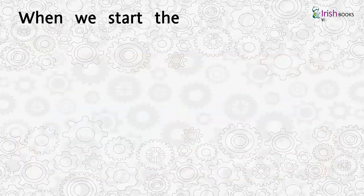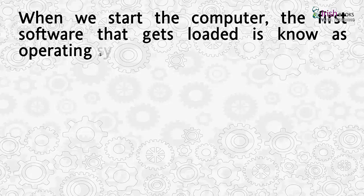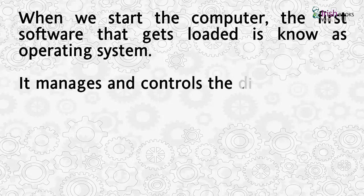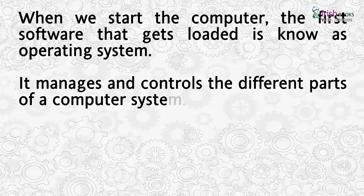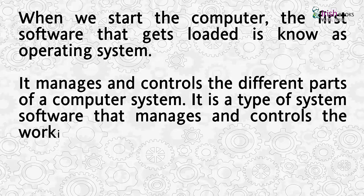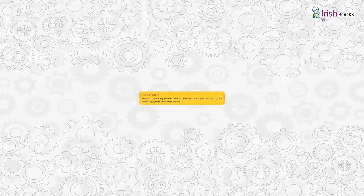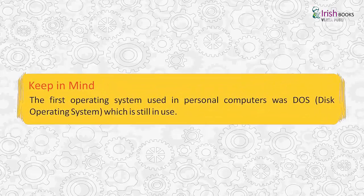When we start the computer, the first software that gets loaded is known as the operating system. It is a type of system software that manages and controls the working of a computer system. Keep in mind, the first operating system used in personal computers was DOS — disk operating system — which is still in use.